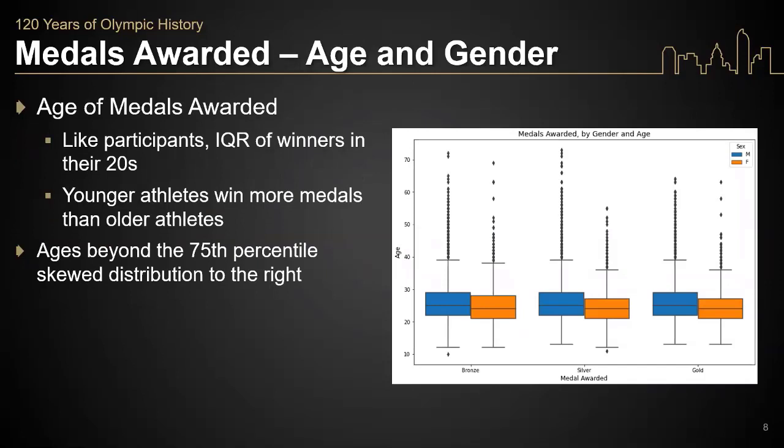Taking a closer look at individuals that actually won awards based on their age and gender, we can see that, like the participants, the IQR of winners tends to be in their 20s. Looking at the distribution in the box plot, we also see that most athletes who are younger win more than older athletes, and those older athletes skew the data to the right. The differences in medal winning between male and female participants is roughly the same.